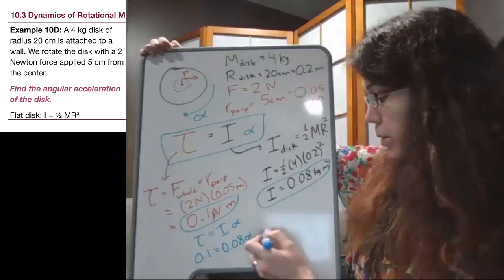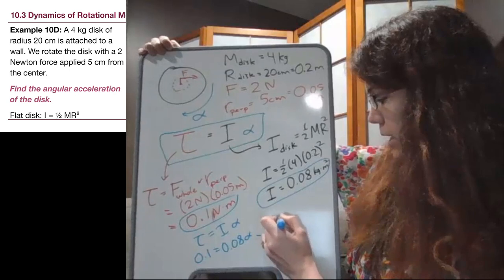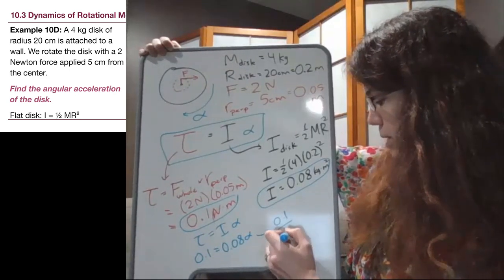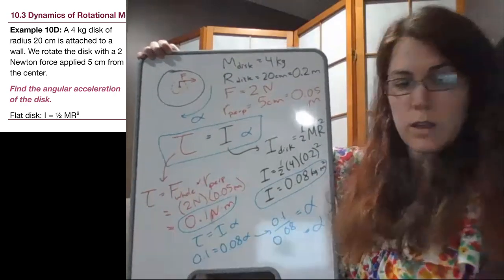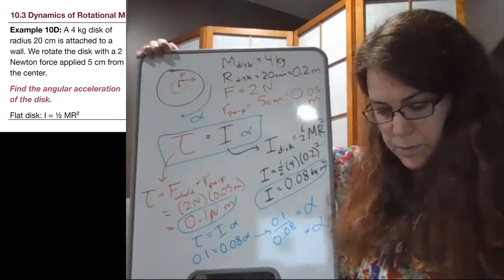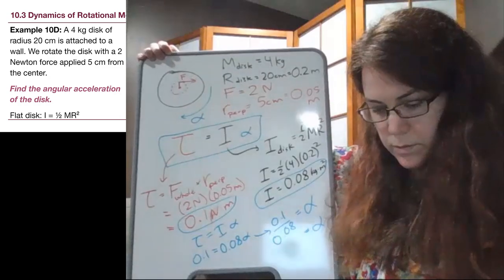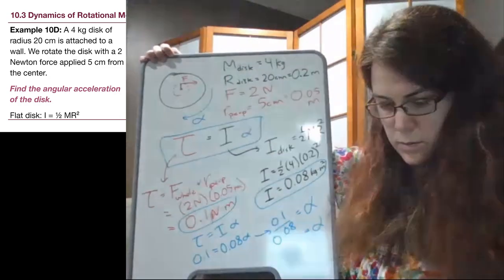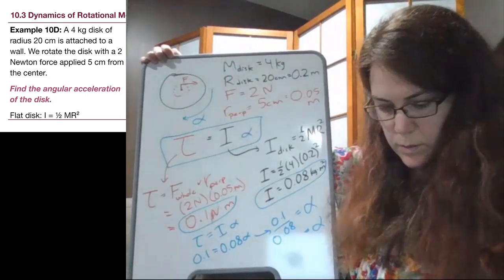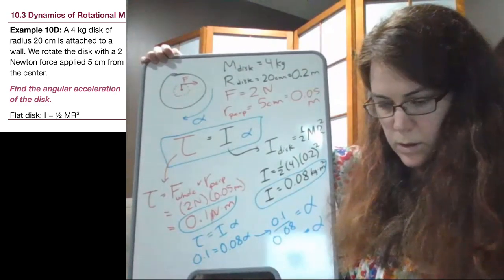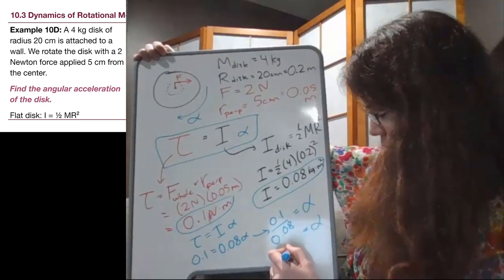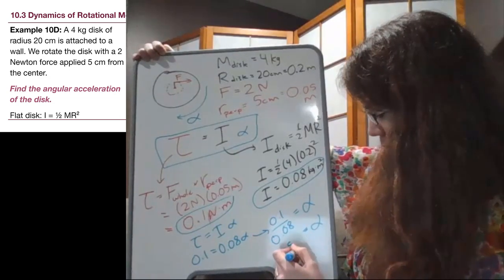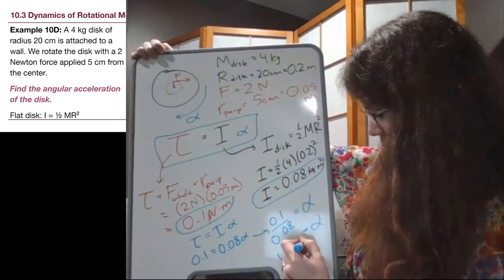And then if we divide both sides by 0.08, 0.1 divided by 0.08 becomes our alpha. And so we can calculate that. All right, and we get 1.25 radians per second squared.